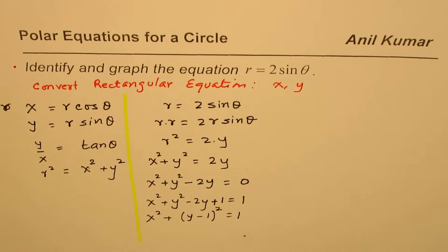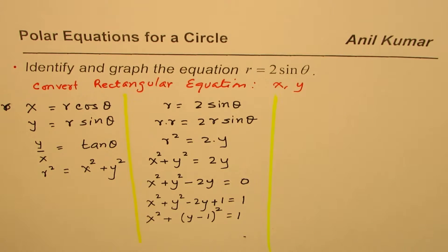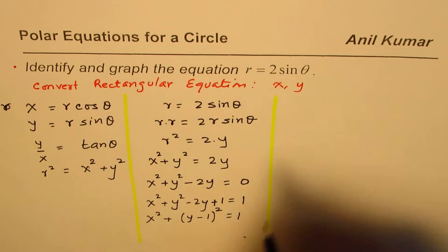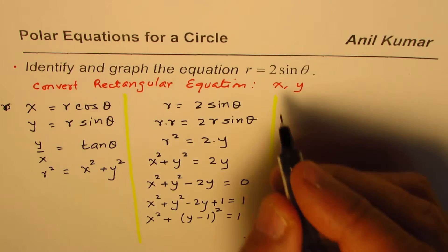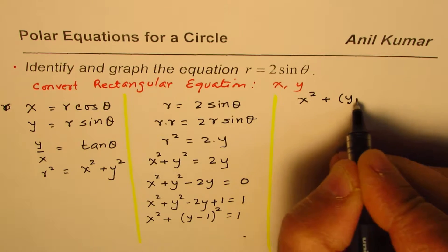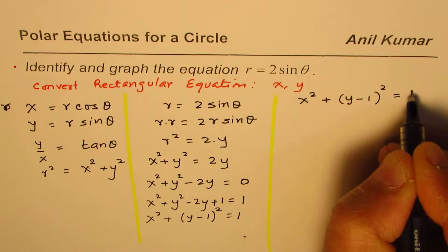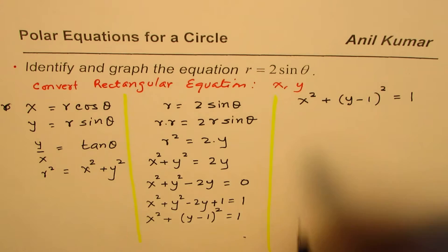Now we can write this as x square plus y minus 1 whole square equals 1. So what do we get? We get an equation which is definitely in rectangular form. The equation is x square plus y minus 1 whole square equals 1.